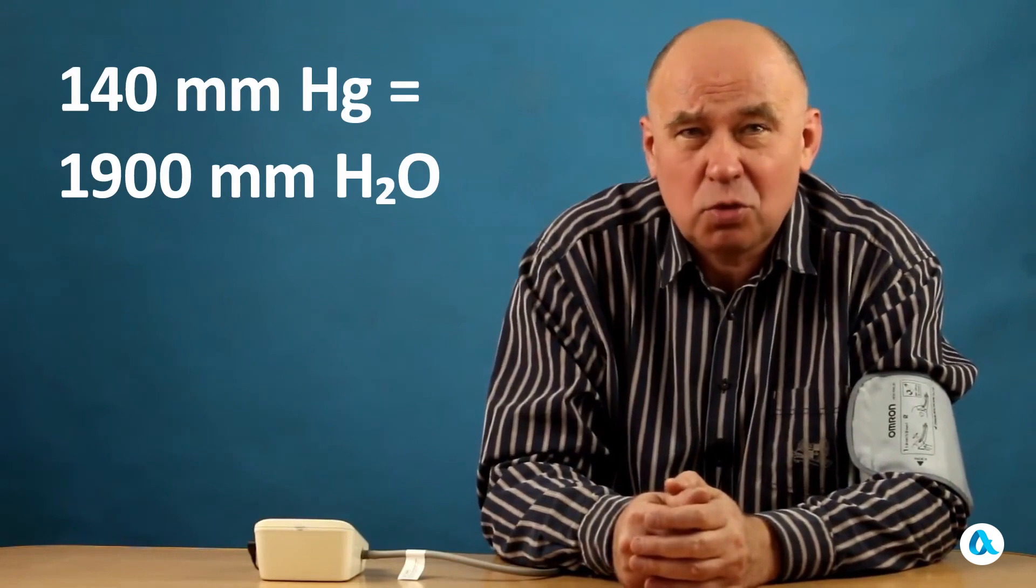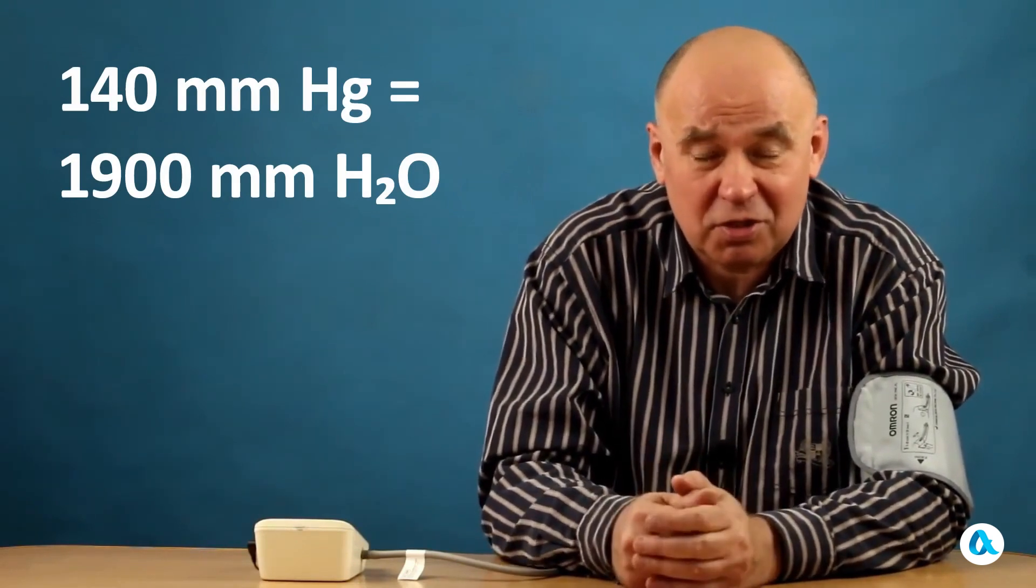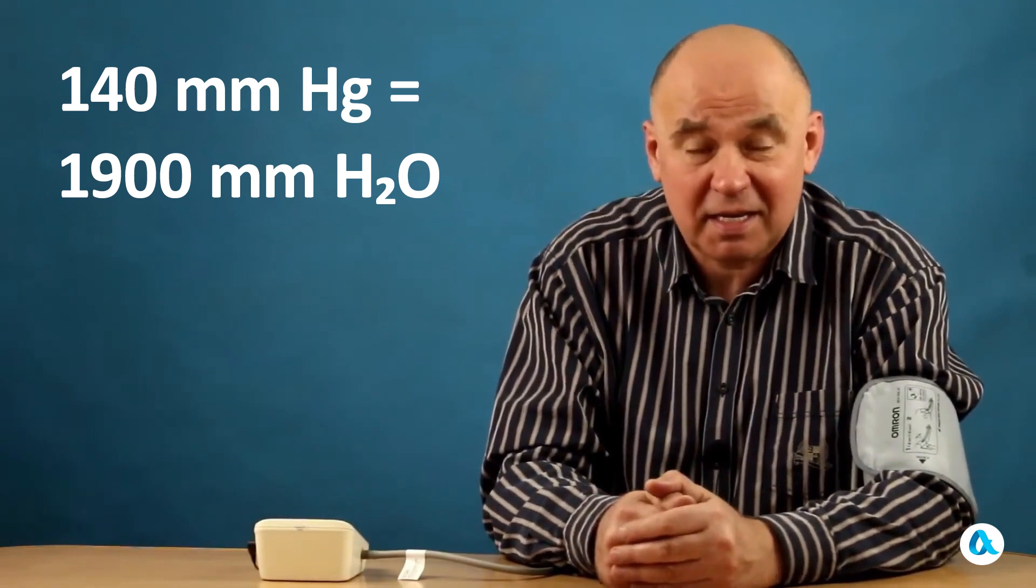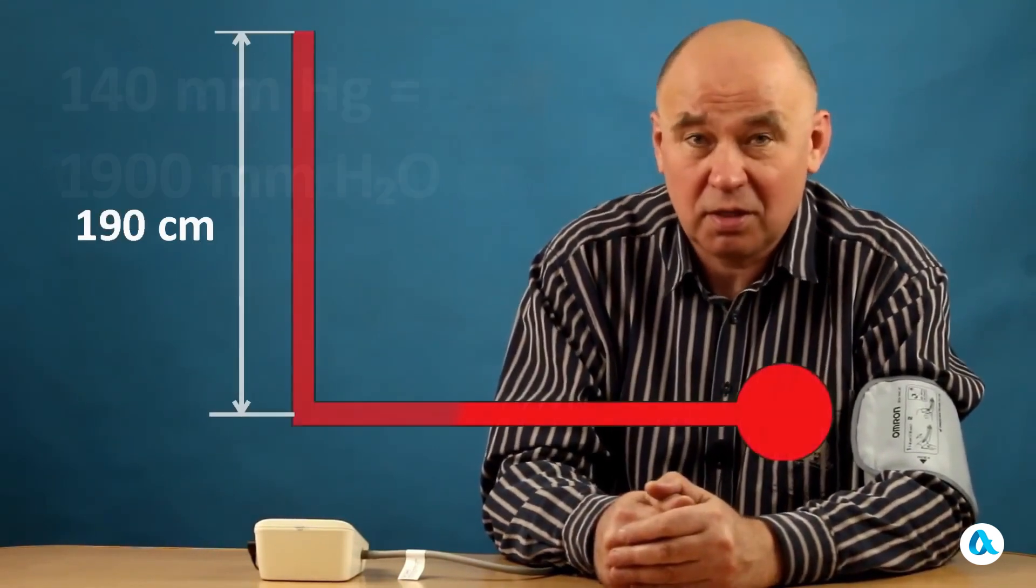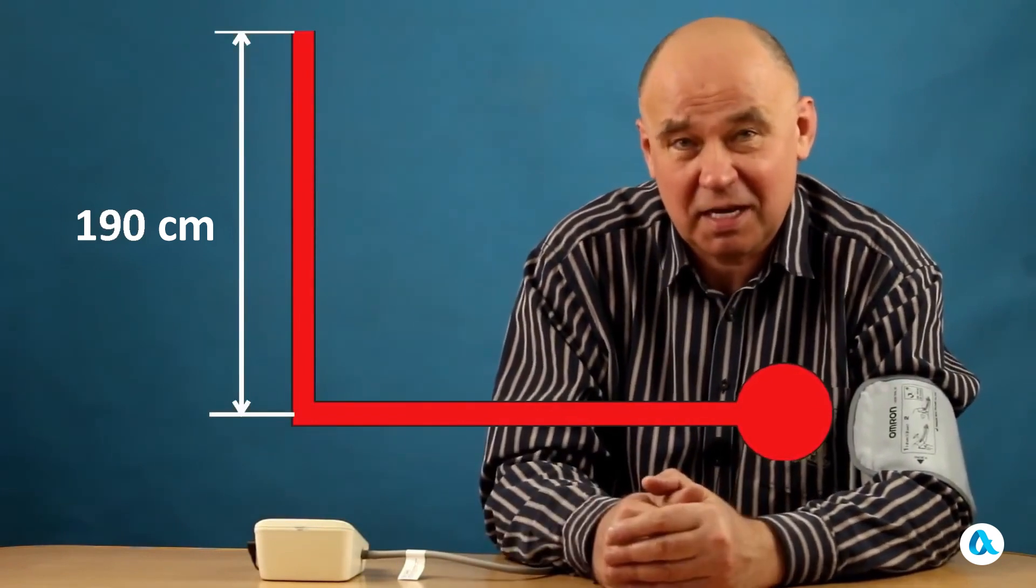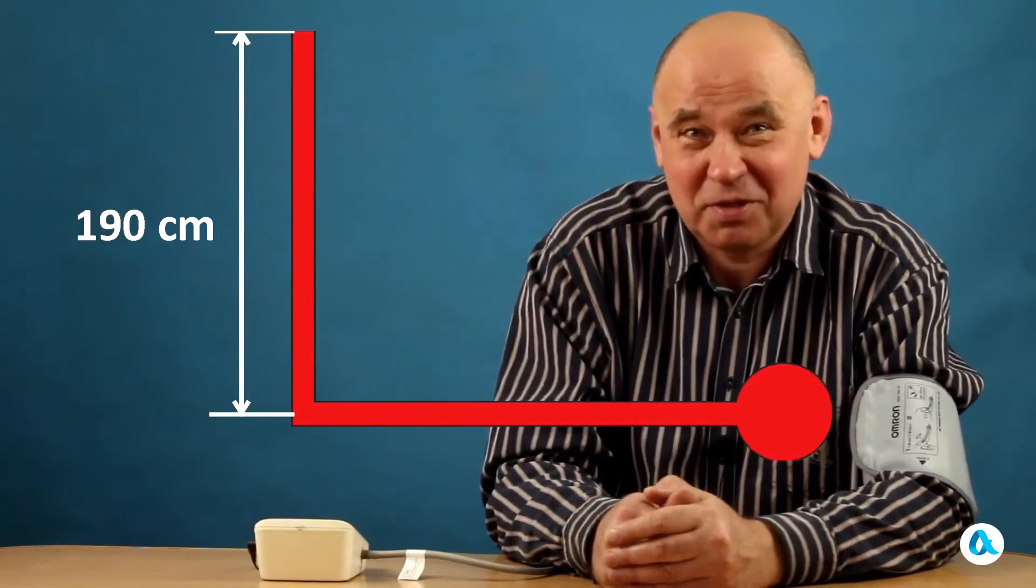So, my 140 pesiza millimeters of mercury in systole convert into 190 centimeters, almost 2 meters of water column. This is the height to which the heart, acting as a pump, could raise water. And since the density of blood is practically the same as that of water, blood could also be pumped to such a height.